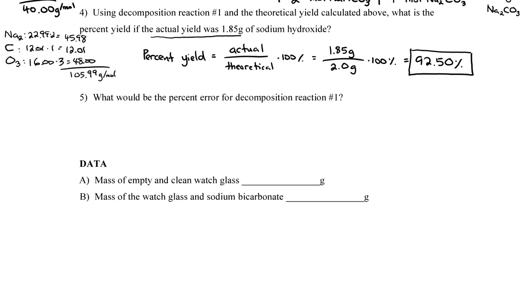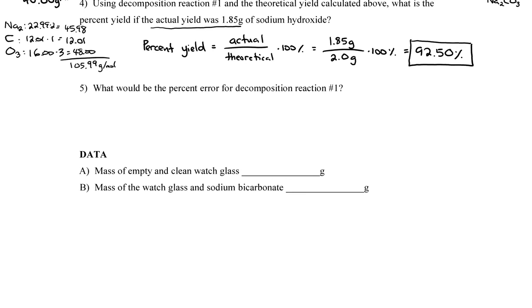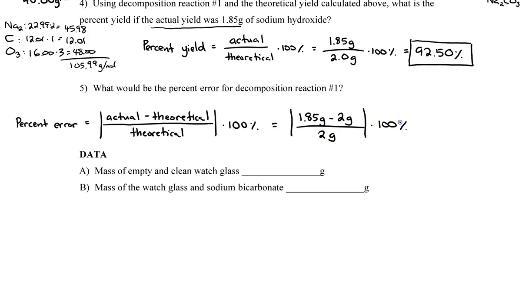Finally, we have 5. What would be the percent error for decomposition reaction number 1? Let's write down the equation for percent error. Percent error is the absolute value of actual minus theoretical over theoretical times 100%. I plug in my numbers. I have 1.85 grams minus 2 grams over 2 grams times 100%. And when I do, I get 7.5% error. We are done with the pre-lab.